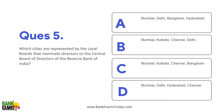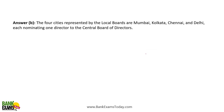Which cities are represented by local boards that nominate directors to the central board of directors of RBI? The four cities are Mumbai, Kolkata, Chennai and Delhi. Directors are nominated from these four cities.